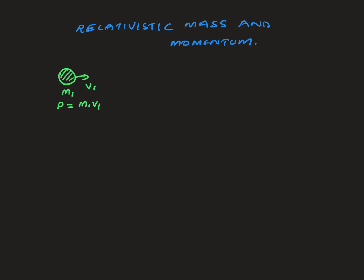But if you have a mass and the speed v2 is a relativistic speed — something close to the speed of light or half the speed of light — then we can't use the same formula. As discussed in the previous video on time dilation and length contraction, we use the factor gamma. So we define p as gamma m2 v2, so the momentum is gamma m2 v2.